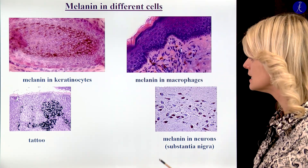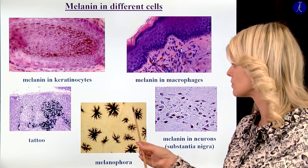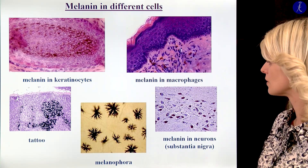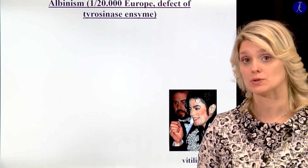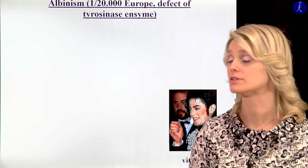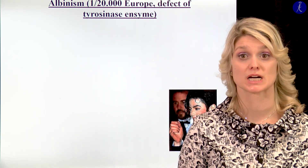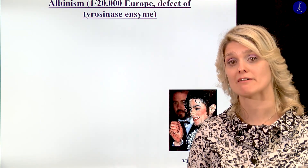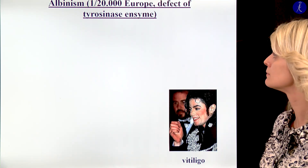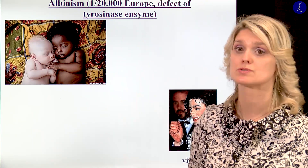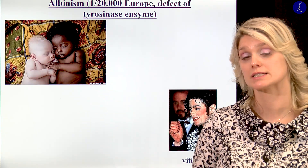Finally, I would like to tell you some words about the disorder of the synthesis of the pigment. If we have a problem with the melanin production, those people have paler skin and white hair. This is called albinism. Albinism affects 1 in 20,000 in European countries, and it is much more frequent in Africa, for example.